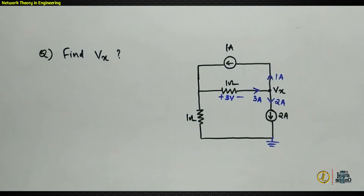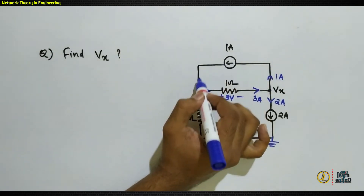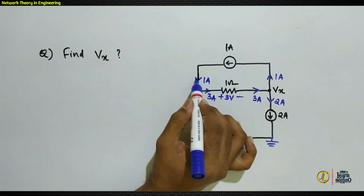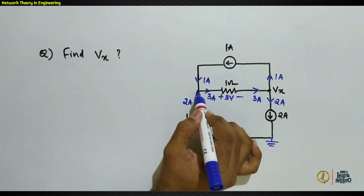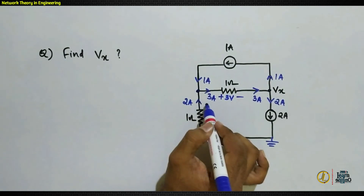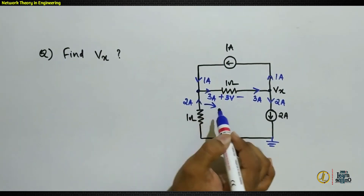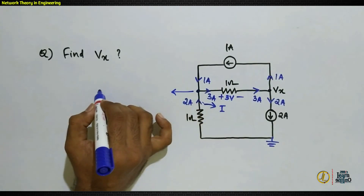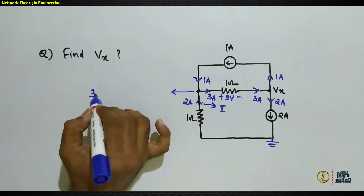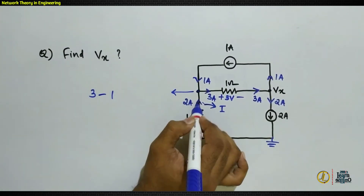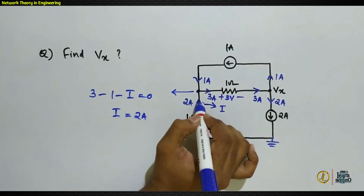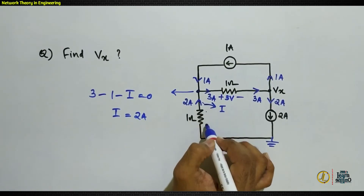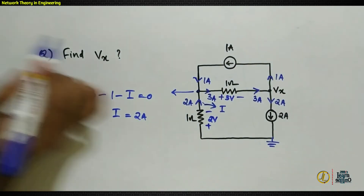At the other node, 1 ampere is entering and 3 amperes is leaving, so there must be a 2-ampere current through the remaining branch. Using KCL: 3 − 1 − i = 0, giving i = 2 amperes. A 2-ampere current through the 1-ohm resistor results in a 2-volt voltage drop across that resistor.